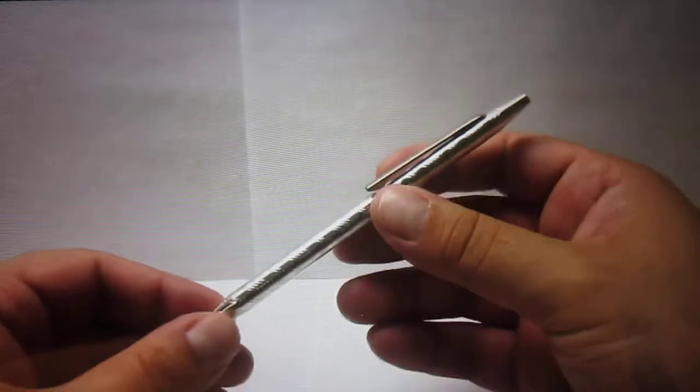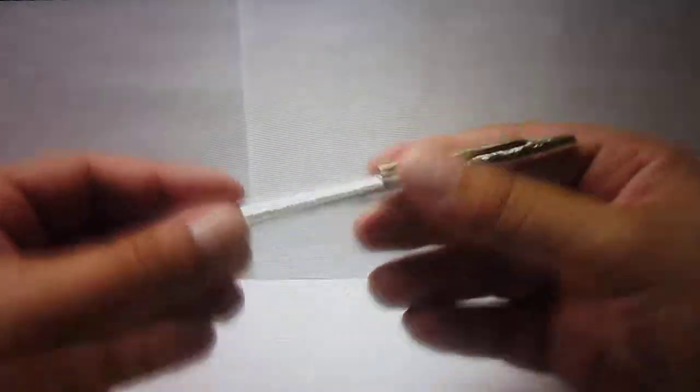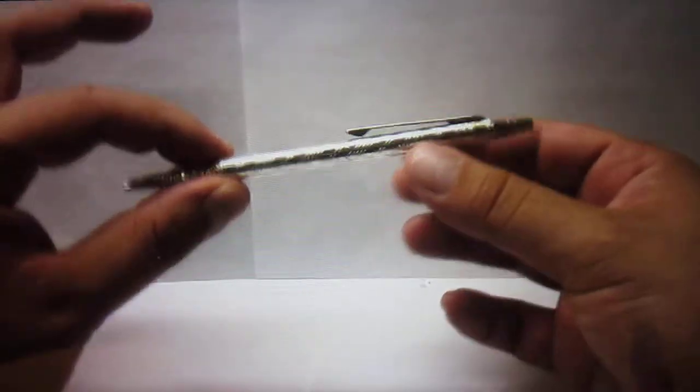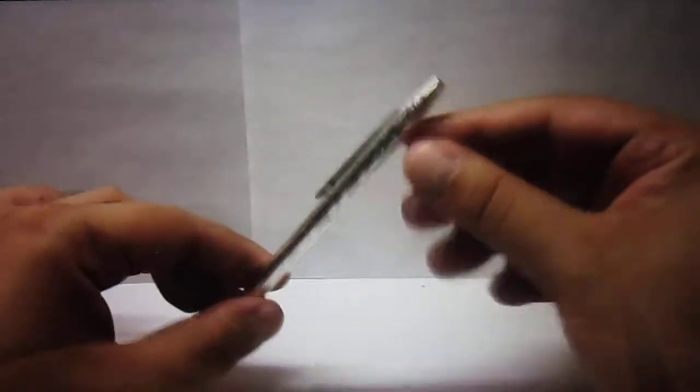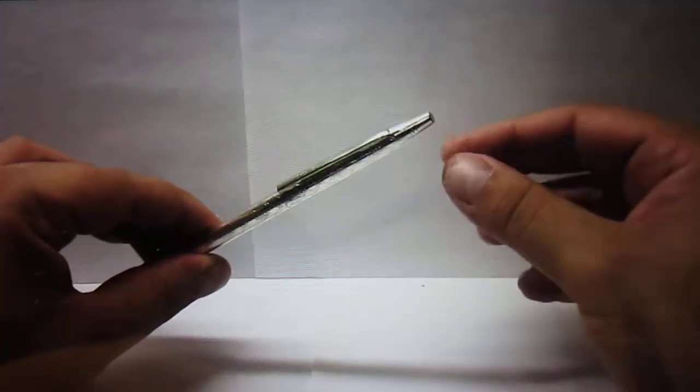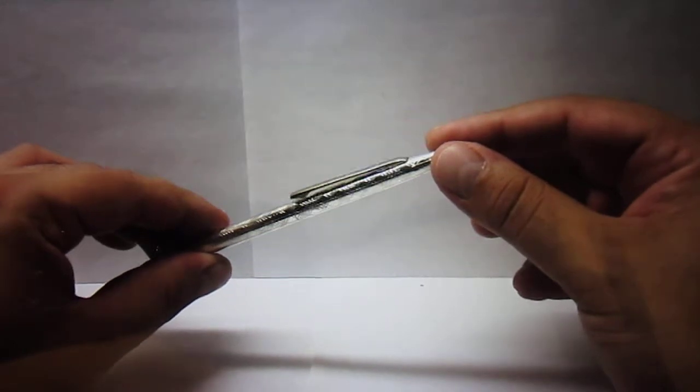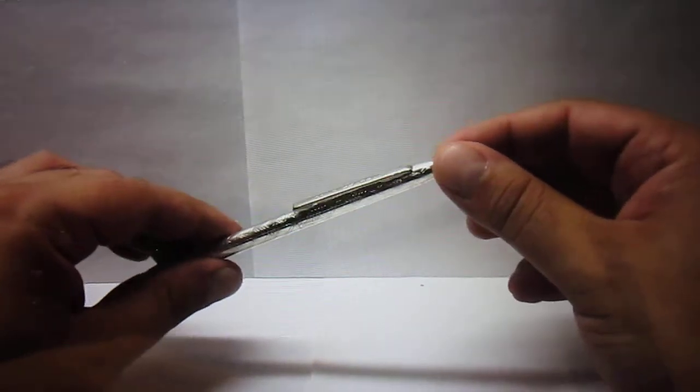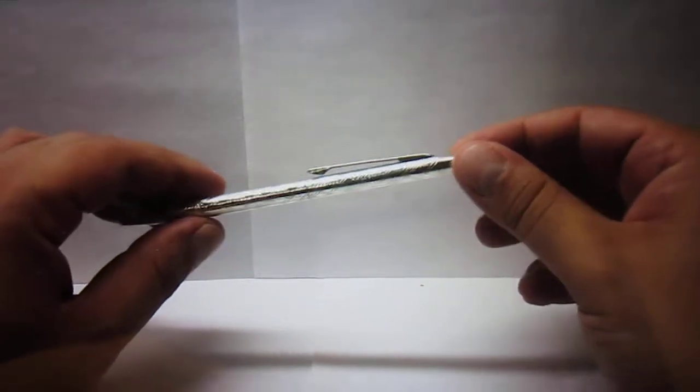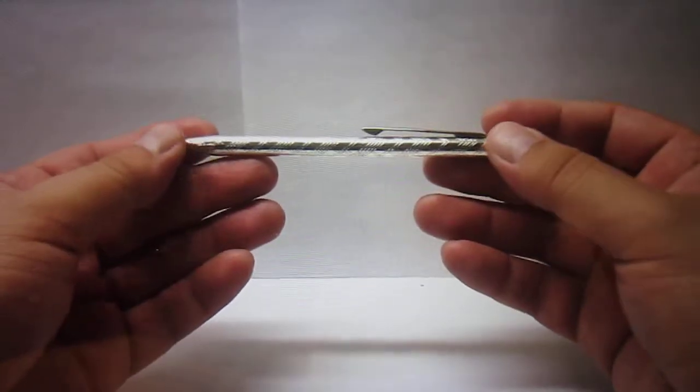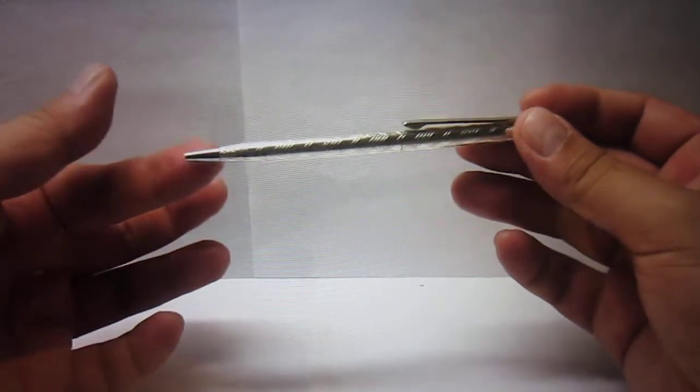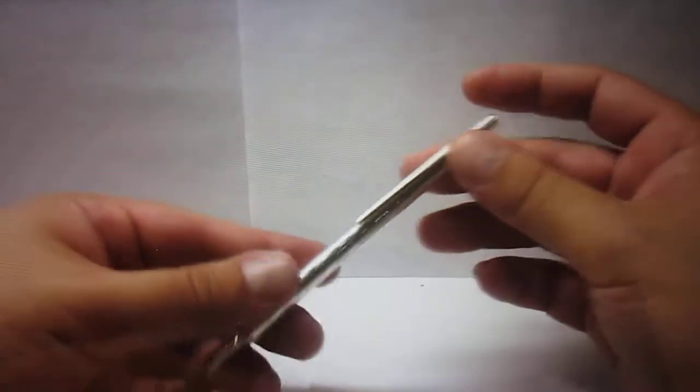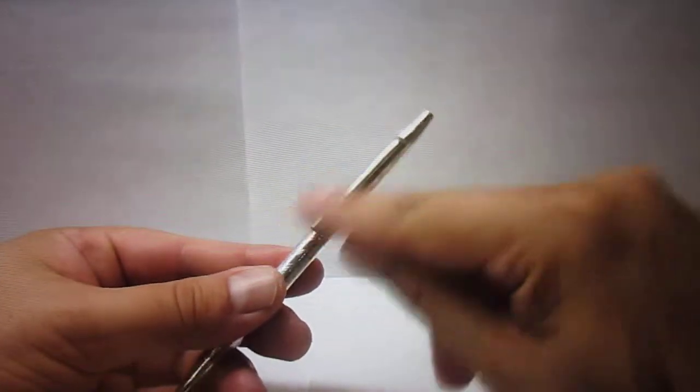So what makes this pen distinctive? Well, the barrel and the cap is fully sterling silver all the way to the tip, which is a good thing. You don't have a metal tip or another metal chrome or plastic tip unlike Cross pens. It has a chrome plated tip and the clip is also chrome plated.